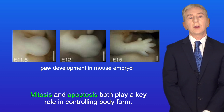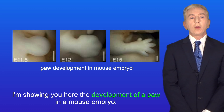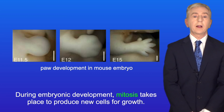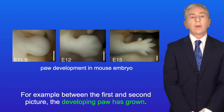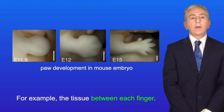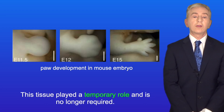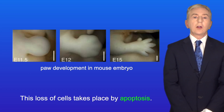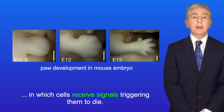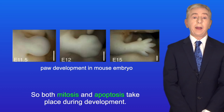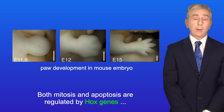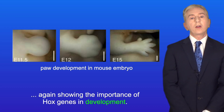Mitosis and apoptosis both play a key role in controlling body form. During embryonic development, mitosis takes place to produce new cells for growth. However, as development continues, some tissue is lost — for example, the tissue between each finger in a developing mouse paw. This tissue played a temporary role and is no longer required. This loss of cells takes place by apoptosis, which is a tightly controlled process in which cells receive signals triggering them to die. Together, mitosis and apoptosis influence how an organism's body plan forms, and both are regulated by HOX genes.